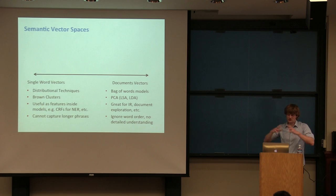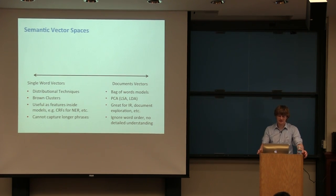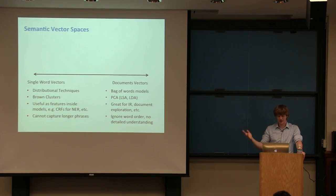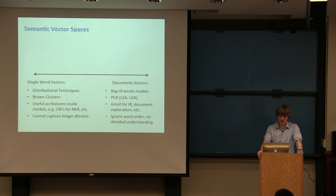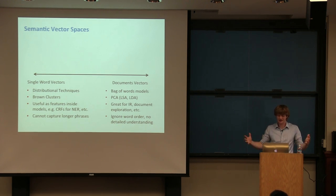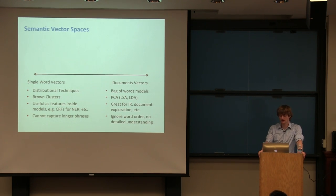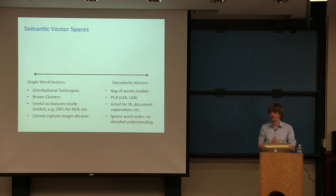The question is how to represent the meaning of longer phrases. The answer we'll give today is by mapping those phrases into the exact same vector space as words. There are many representations for single word vectors — Word2Vec, GloVe, Brown clusters — all capturing co-occurrence statistics. There are also bag-of-words and PCA-based models for document representations, which are reasonably good for information retrieval and document exploration.